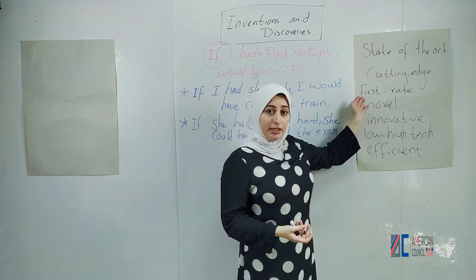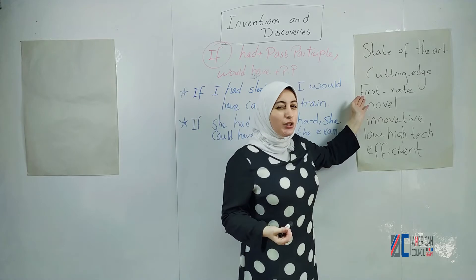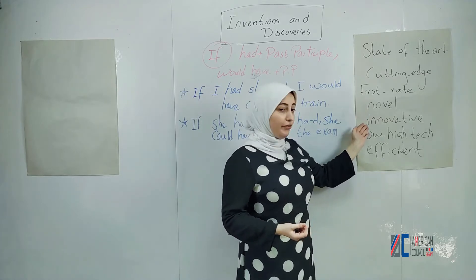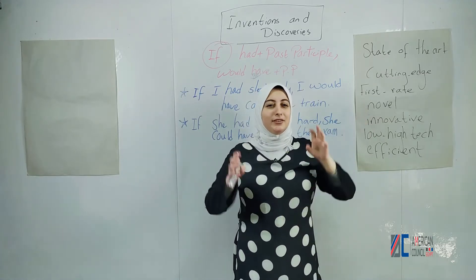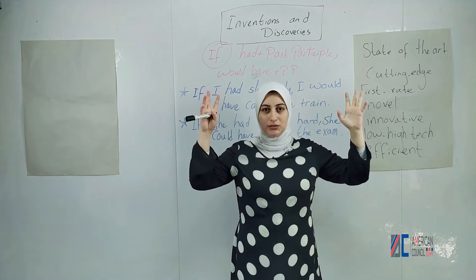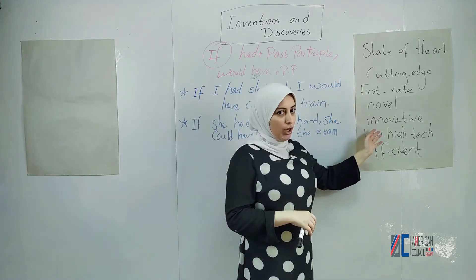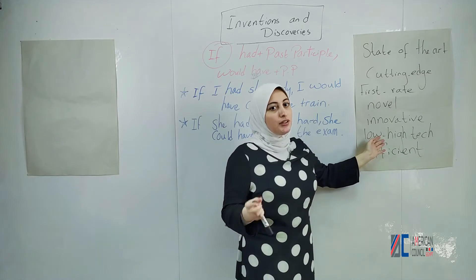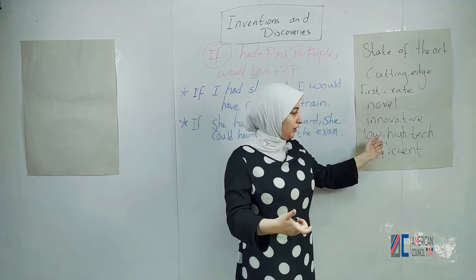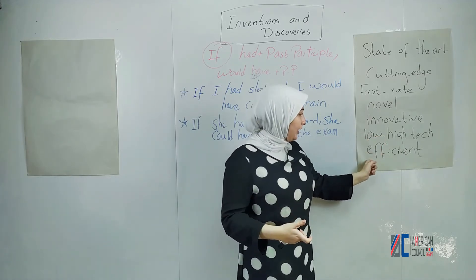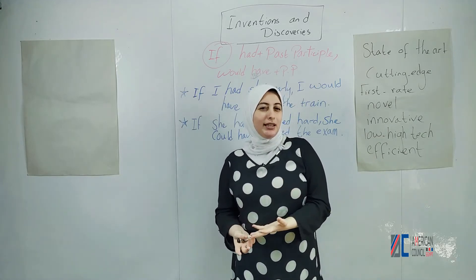First-rate — I use it to speak about something that has high quality. Novel and innovative — you use them to speak about things that have out-of-the-box, creative ideas. Low and high tech — of course you are referring to the technology, the machine, or the device it's using. And efficient — it means that it's working properly.